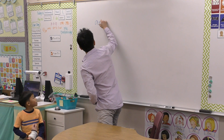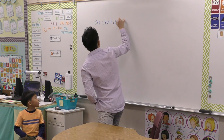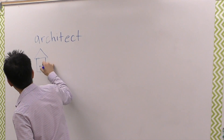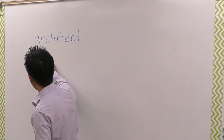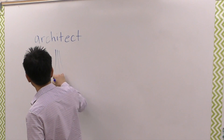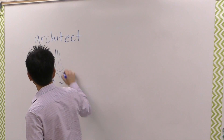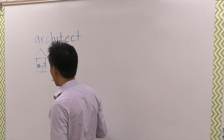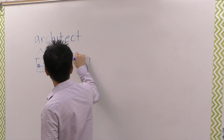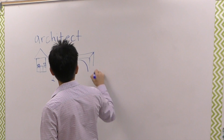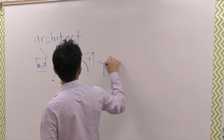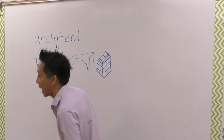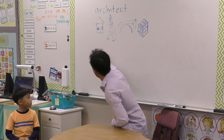Now the story begins with an architect. Do you know what an architect is? An architect designs houses. An architect also designs buildings, cars, bridges, and sometimes an architect designs structures — something that can stand on its own.